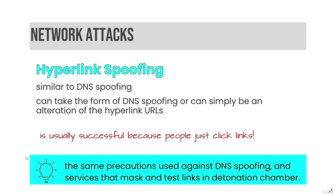Another form of network attack is hyperlink spoofing, which is very similar to DNS spoofing. It can take the form of DNS spoofing or simply be an alteration of hyperlink URLs. It is usually successful because users tend to trust links without verifying them.